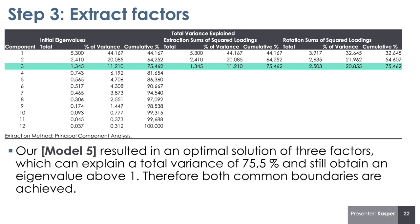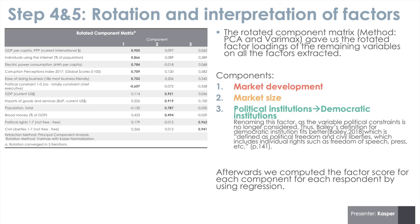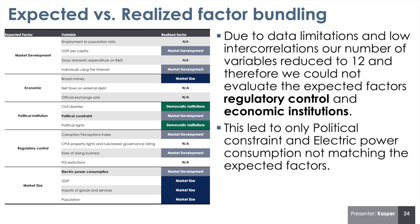We rotated the matrix and named the components market development, market size, and democratic institutions. The last one is renamed from political institutions, since the variable political constraints was removed from the factor — therefore Bayley's definition of democratic institutions fits better. Our expected and realized factors did not match one to one, mostly due to data limitations, which led to a reduction from 18 variables to 12 variables, resulting in only three factors.